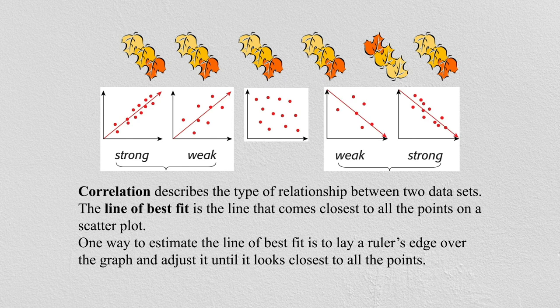The line of best fit is a line that comes closest to all the points on a scatter plot. This line of best fit explains the correlation between the two variables. We have seen that because there is a relationship between the two, the correlation is explained with the help of the line of best fit.